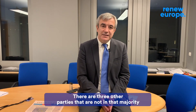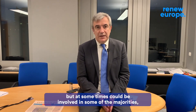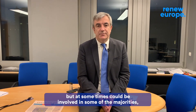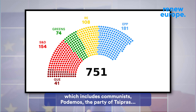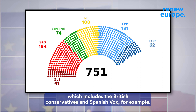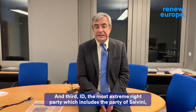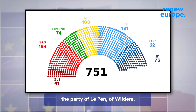There are three other parties that are not in that majority, but that sometimes could be involved in some of the majorities, though often are in the opposition. First, GUE, the party to the left of the Socialists, which includes communists, Podemos, and the party of Tsipras. Second, ECR, the party to the right of the Christian Democrats, which includes the British Conservatives and Spanish Vox. And third, ID, the most extreme right party, which includes the party of Salvini, the party of Le Pen, or Wilders.